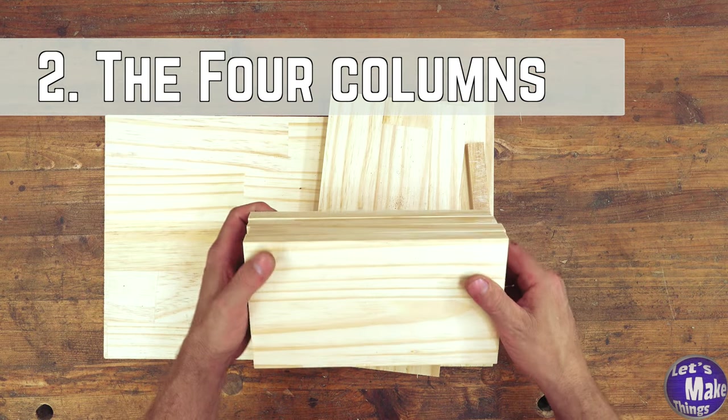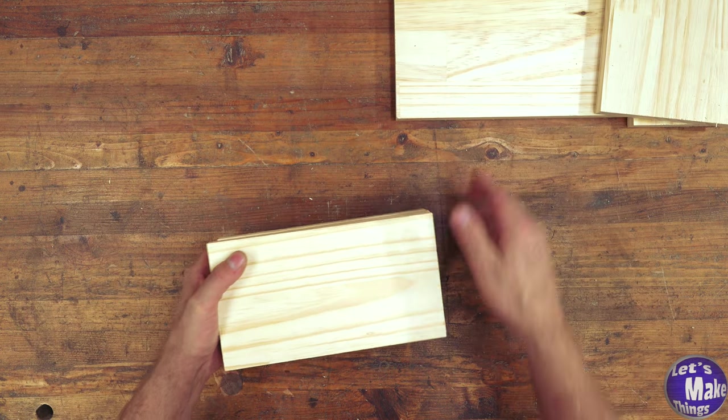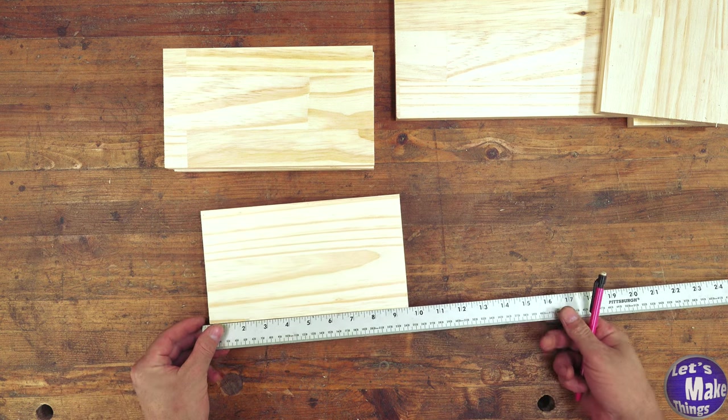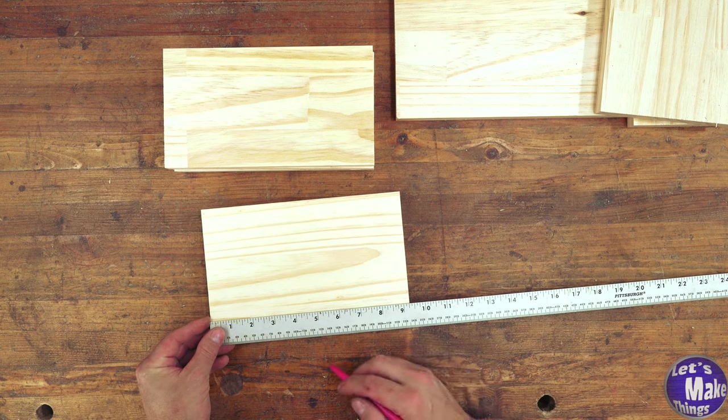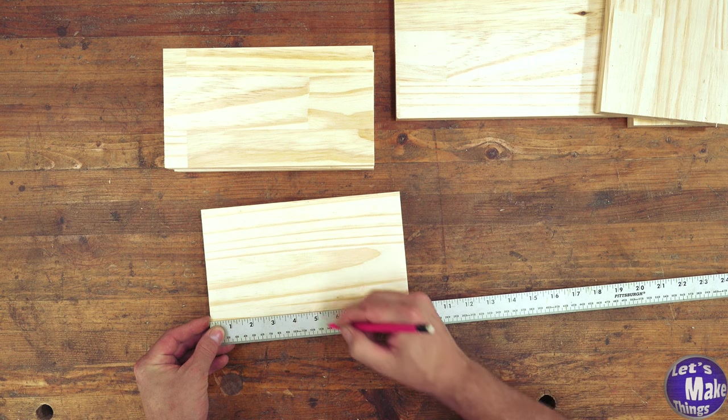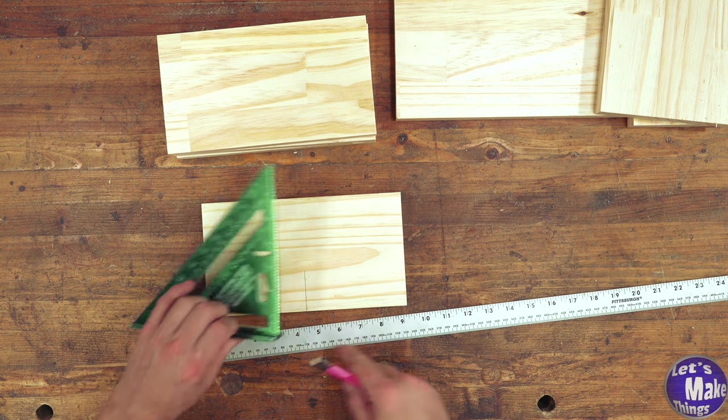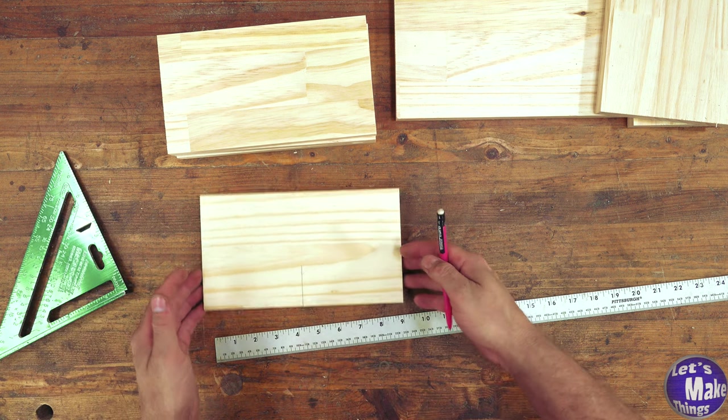We're going to start off with the four pieces that are 9 1/4 inches wide. I'm going to find the center, so 9 1/4 inches is 4 5/8 if we cut that in half. I'll put a speed square on that mark and draw a line up, maybe an inch.